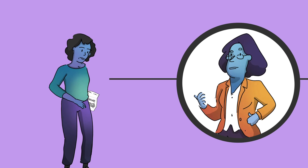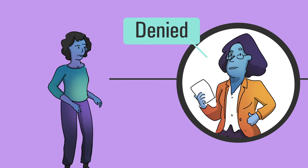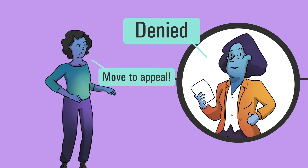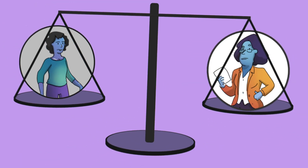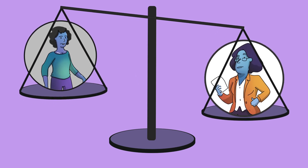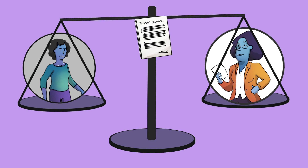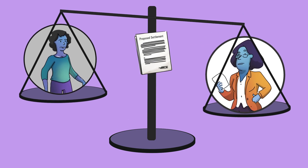For example, if Anita does not provide correct documentation, the claims administrator may deny her application for compensation. If Anita submits a claim which is denied by the claims administrator, she may have the right to appeal that decision. But every settlement is different. Whether Anita has the right to appeal the claims administrator's decision depends on the terms of the settlement agreement.